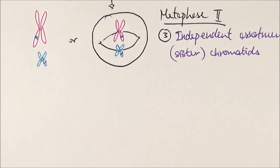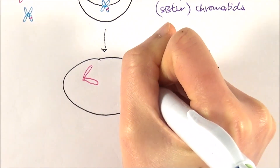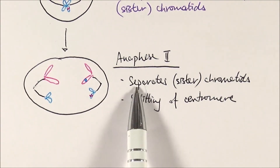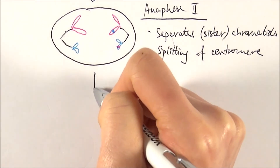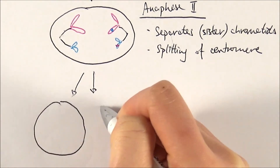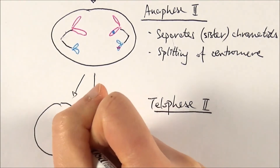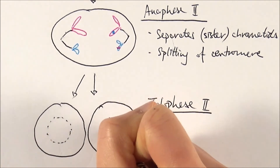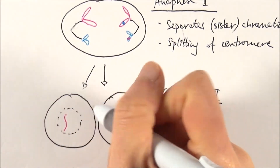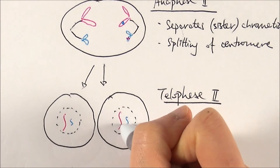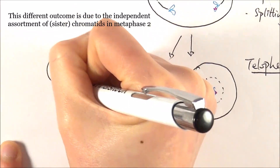In anaphase two, the sister chromatids split up — one flies to each side. This time it is the sister chromatids that are separating, and the centromere splits at this point. That is the major difference between anaphase one and anaphase two — in anaphase one the centromere stays intact, while in anaphase two the centromere splits. We then get two separate cells heading into telophase two.